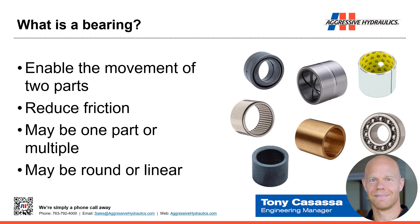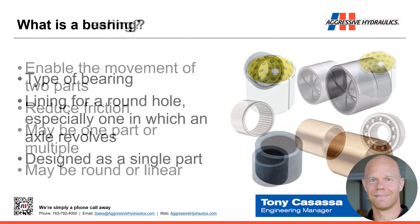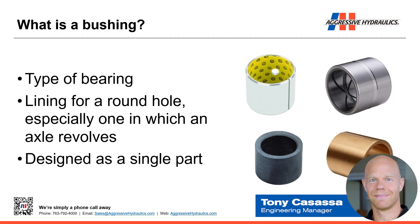In our picture here, we have some things that are one piece, like this one and this one and this one. And some that are multiple pieces, like this vertical bearing, this needle bearing, or this ball bearing. A bushing is a type of bearing, and it's described as something for a round hole, especially one in which an axle revolves.